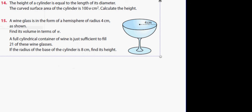Question 14 on which X is this? 17.2. The height of a cylinder is equal to the length of its diameter. So if we were to draw this cylinder...